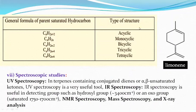In this way we can also determine the structures of acyclic, monocyclic, bicyclic, tricyclic, and tetracyclic compounds. Last are the spectroscopic studies, the latest technique, in which UV spectroscopy gives the position of conjugated dienes or alpha-beta unsaturated ketones. IR spectroscopy detects the functional groups present in the molecule, and NMR, mass spectrometry, and X-ray analysis are also used to determine the structure of terpenoids.